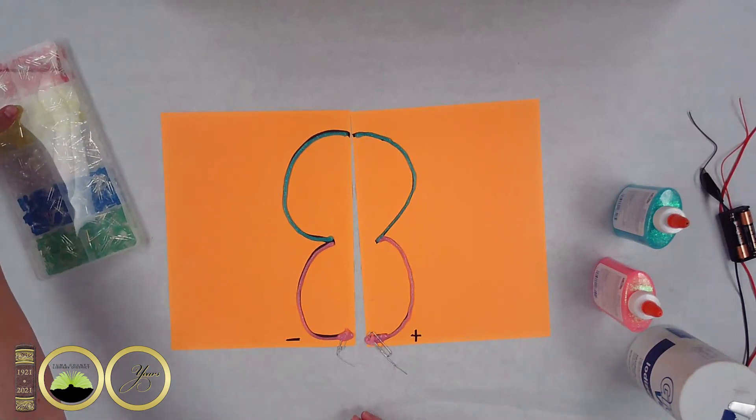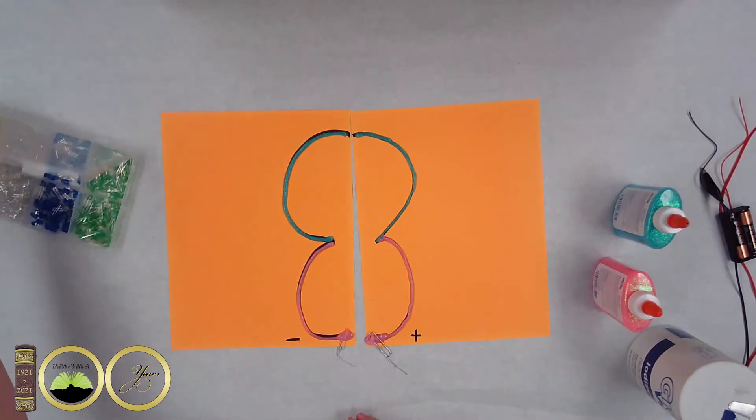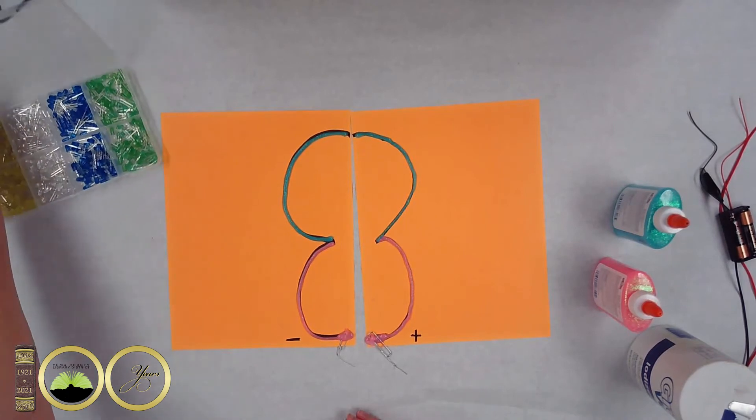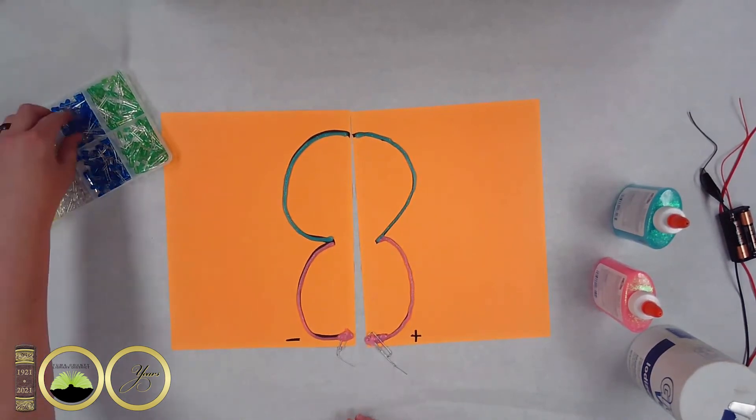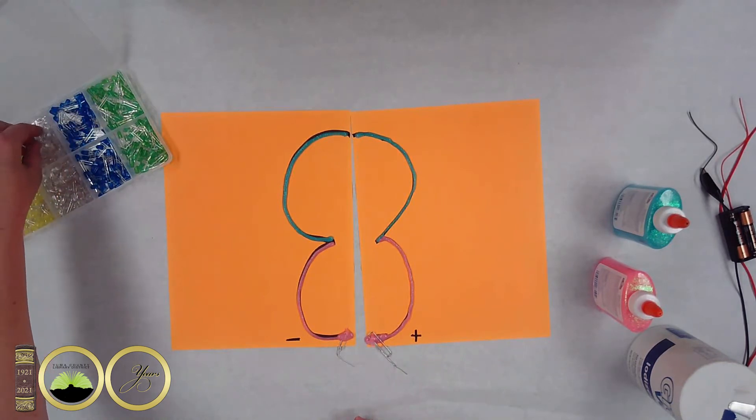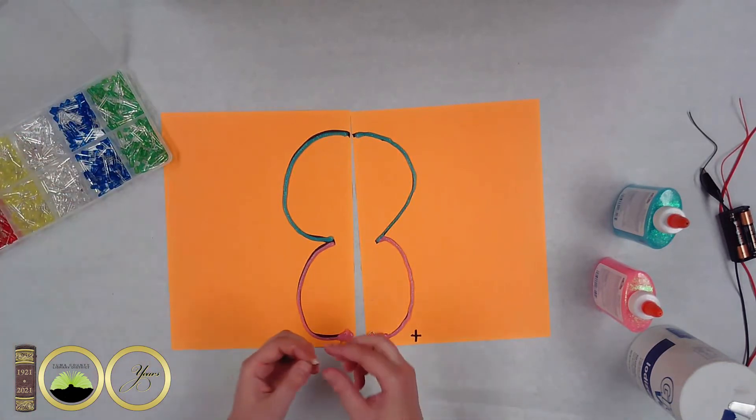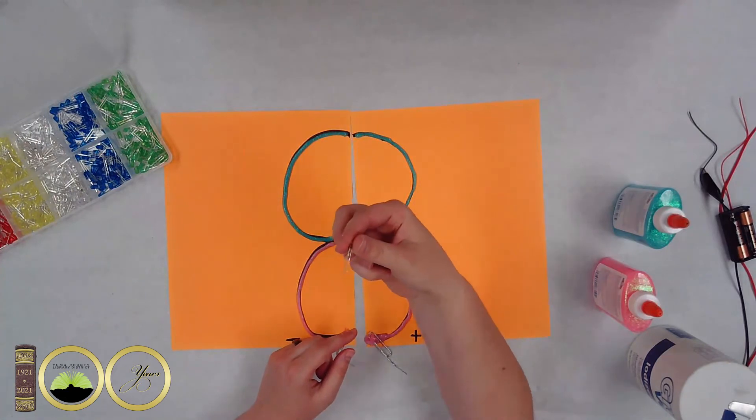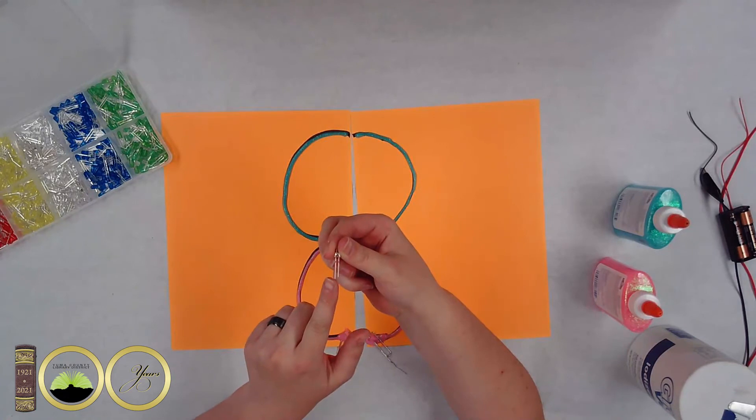So now go ahead and choose your LED bulb whatever color you want. I went ahead and decided I was going to do clear just a regular plain LED bulb. So you'll notice that there's two pins on the LED bulb. There's a long one and a short one. The long one is going to be your positive and the short one is going to be your negative.